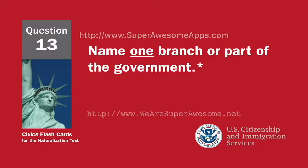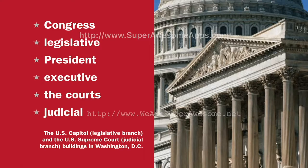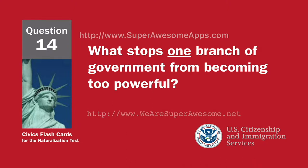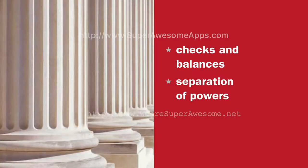Name one branch or part of the government. Congress. Legislative. President. Executive. The courts. Judicial. What stops one branch of government from becoming too powerful? Checks and balances. Separation of powers.